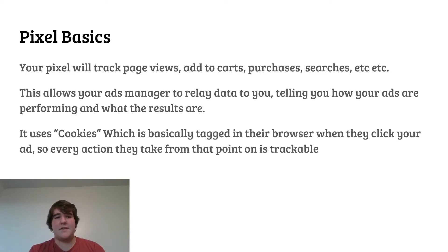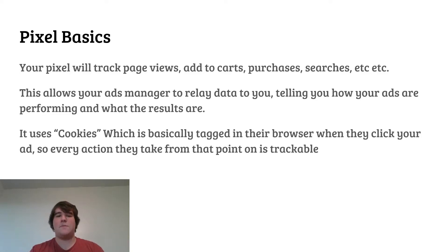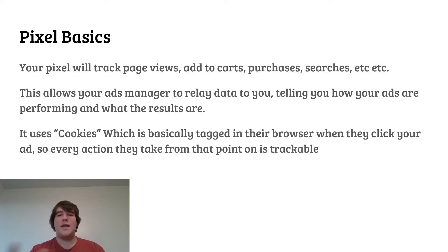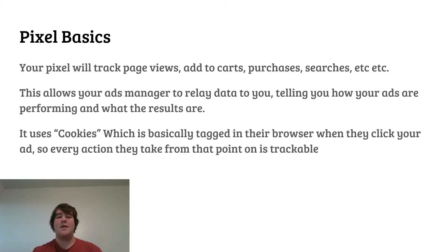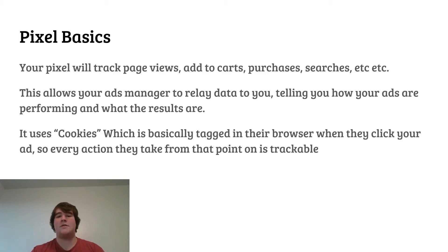Let's go over the Pixel basics. Your Pixel will track page views, add to carts, purchases, searches — whatever actions people can take on your website, the Facebook Pixel can track. This basically allows your ads manager to relay data from your ad to your website and then back to your ads manager, which allows Facebook to tell you how your ads are performing and what the results are. It uses cookies, which are tagged in the user's browser when they click your ad, so every action they take on your website after clicking is trackable, and your ads manager columns will tell you exactly what those actions were.